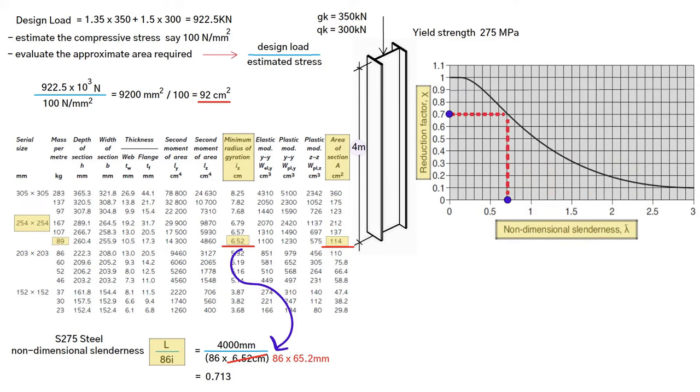As a result, buckling stress equals 0.7 times steel strength 275 newton per millimetre squared. This gives us 192 newton per millimetre squared.